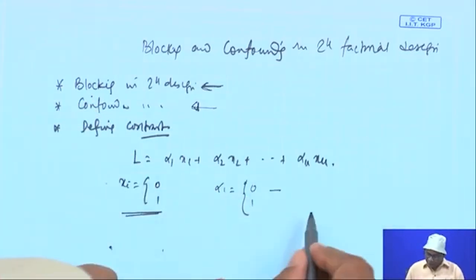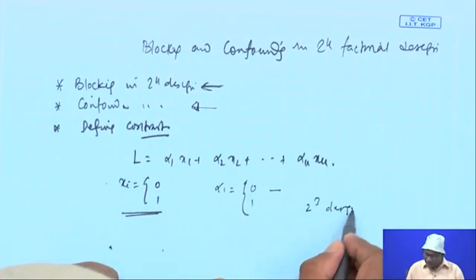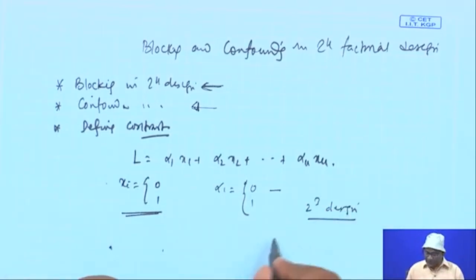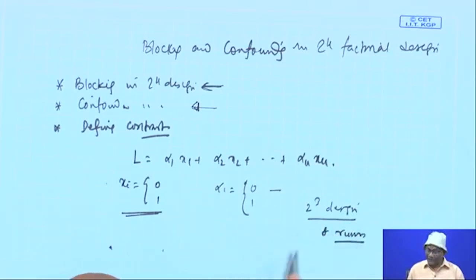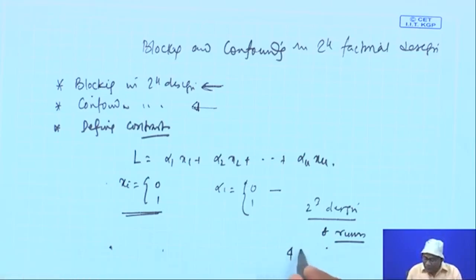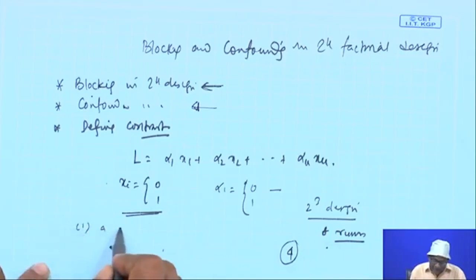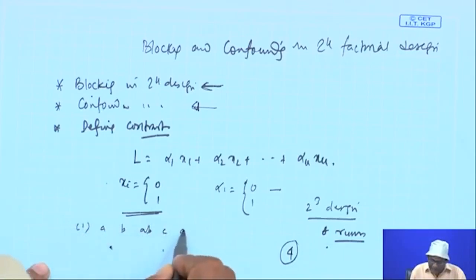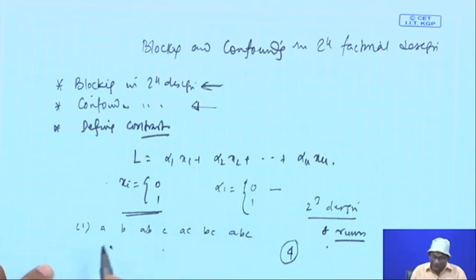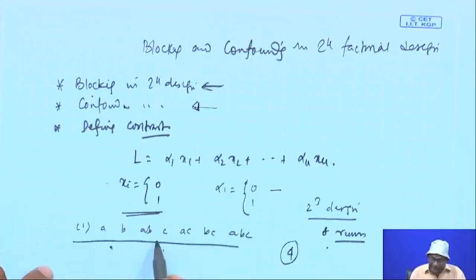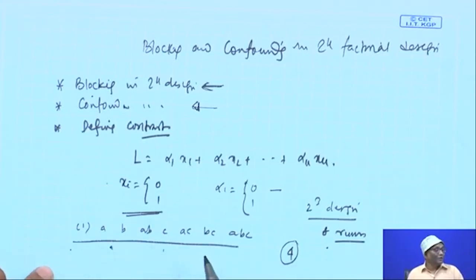In the 2^3 design case, you require 8 runs. Suppose you have insufficient materials and can only accommodate 2^2 runs per block — that means 4 runs per block. The treatment combinations are: 1, a, b, ab, c, ac, bc, abc. The question is which treatment combinations go to block 1 and which go to block 2.